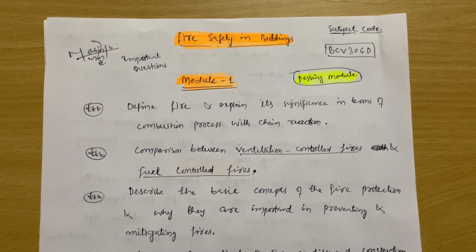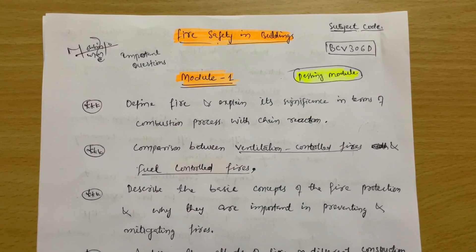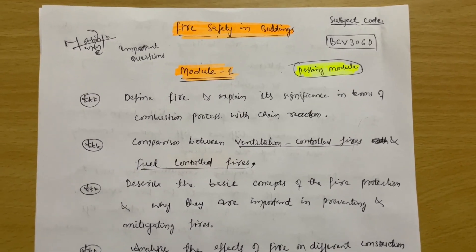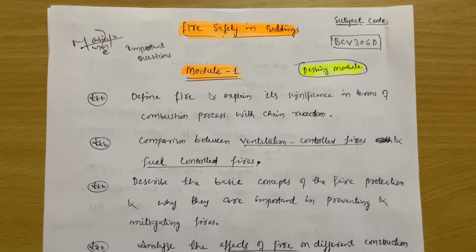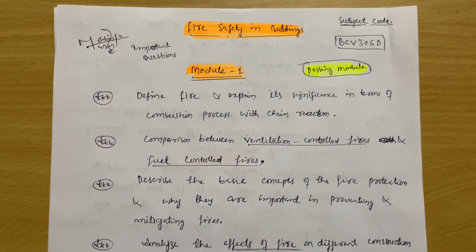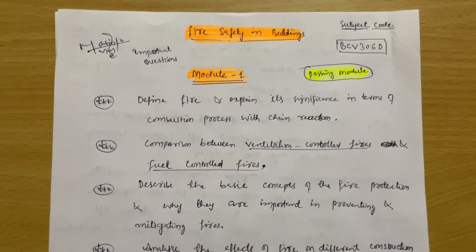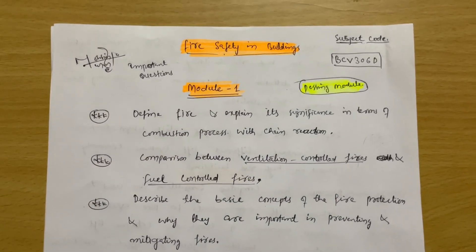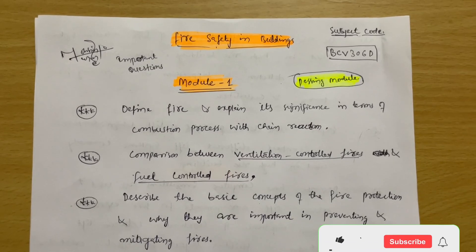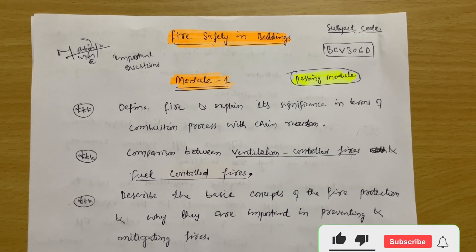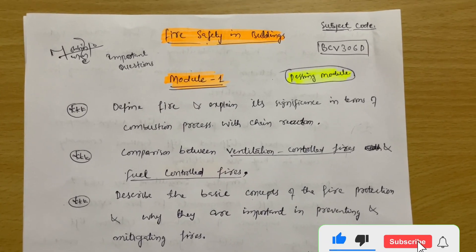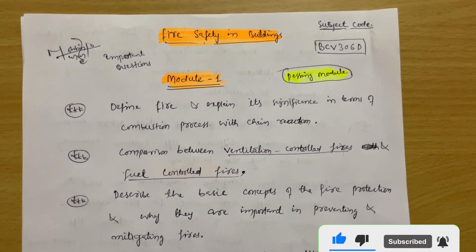Hello everyone and welcome back to my channel. Dear friends, hope you are all doing well. So today I am with another important questions video for the subject Fire Safety in Buildings, which is for civil stream students. The subject code is BCV306D.